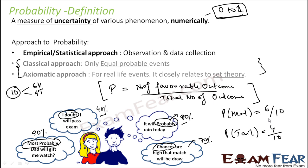Just understand that probability is nothing but the measure of uncertainty of various phenomena, and it is used to represent that numerically. This numerical value is typically between 0 and 1. If it is 0, it means it is an impossible event. If it is 1, that means it is a certain event — it will happen for sure. Words like 'most probably,' 'probably,' and 'chances' are used to show that the statement is not concrete.